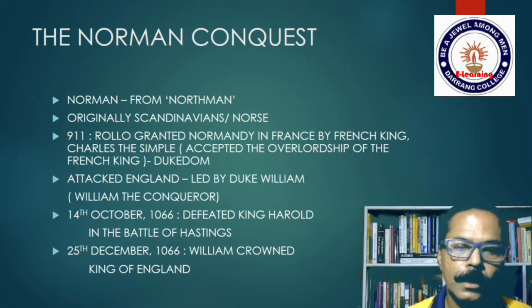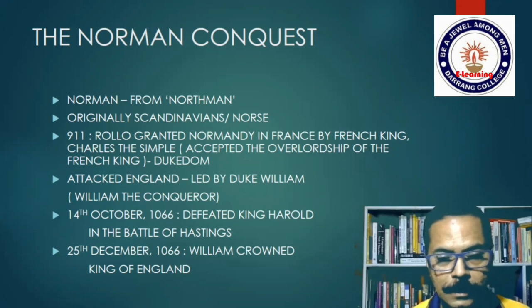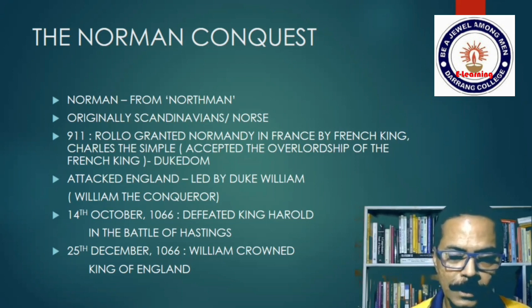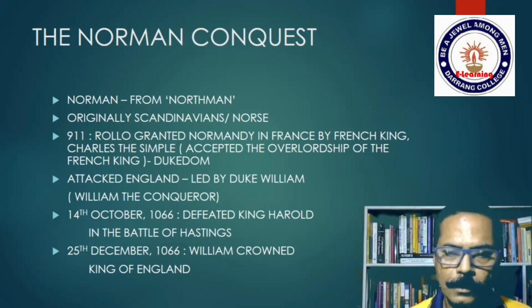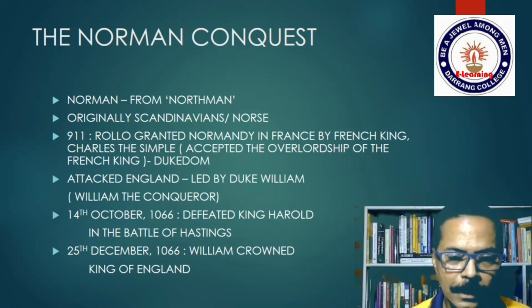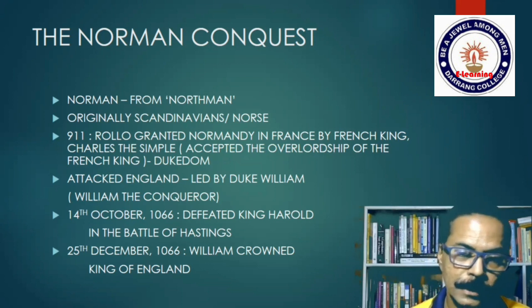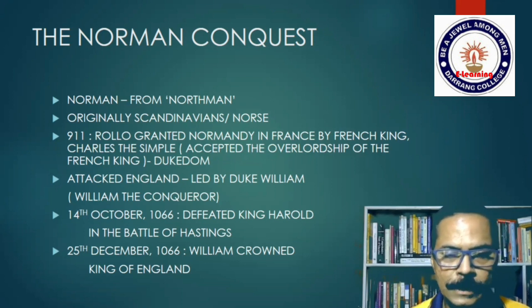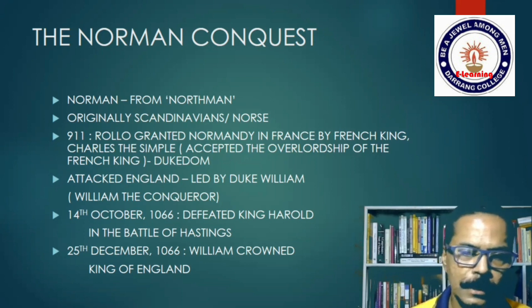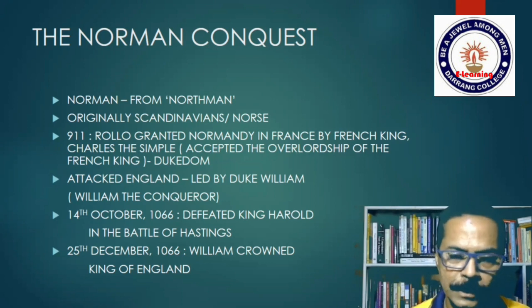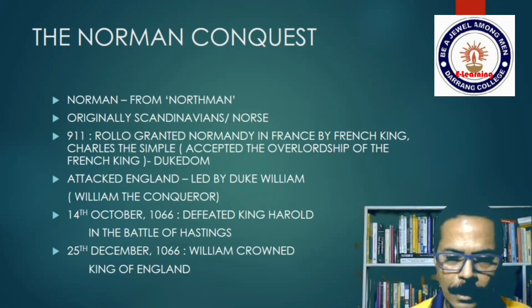By 1066, Normandy was under Duke William. Though the Normans had adopted French culture, they retained their intrinsic Scandinavian zeal and desire for more territory. William's eyes were set on England. In 1066, there was war between the Normans and the English, and on 14th October 1066, Duke William defeated King Harold in the Battle of Hastings. On 25th December — Christmas Day — 1066, William was crowned the king of England. This is the Norman Conquest of England.